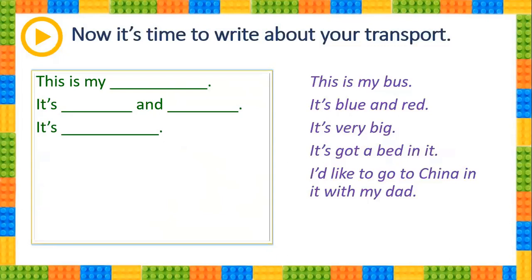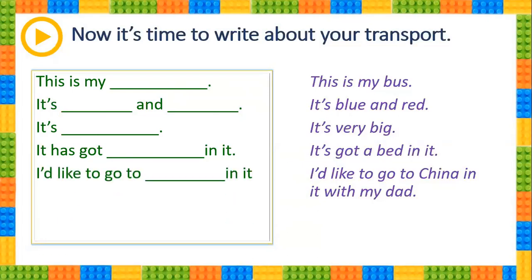It's very small. It has got what in it? Let's say it has got a book or a pen, maybe a wardrobe — whatever you choose. I'd like to go to, let's say, Canada in it. You write your own country. With my friend. You write it.